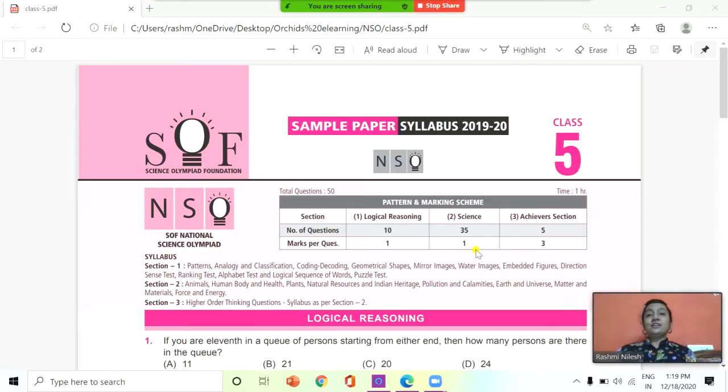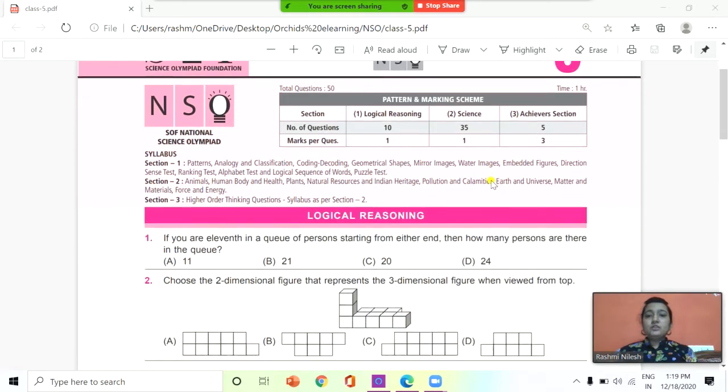Hello everyone, welcome to Orchid's e-learning. Today let us see the sample question paper for class 5 for NSO, that is National Science Olympiad. Let's begin. You can see this is a latest question paper of 2019 and 20 of class 5, so let's see the first question.